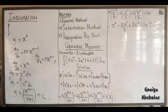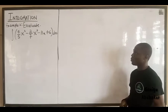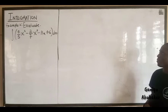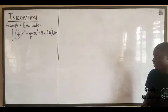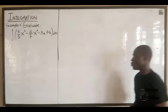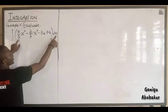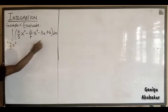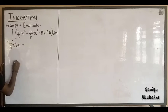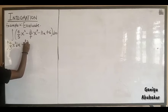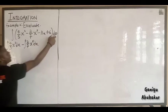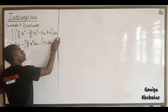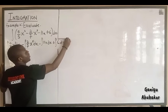Let's do Example 2. Evaluate the integral of 4 over 5 times x cubed, minus 2 over 7 times x to the power 5, minus 11x, plus 6 dx. Our first step is to split the integral across each term: the integral of (4/5)x cubed dx, minus the integral of (2/7)x to the power 5 dx, minus the integral of 11x dx, plus the integral of 6 dx.